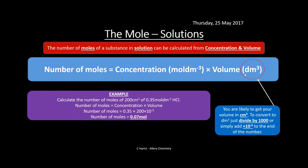For example: calculate the number of moles in 200 cm³ of 0.35 mol dm⁻³ HCl. Moles = concentration × volume = 0.35 × 200 × 10⁻³ = 0.07 mol. The ×10⁻³ converts the 200 cm³ into dm³.